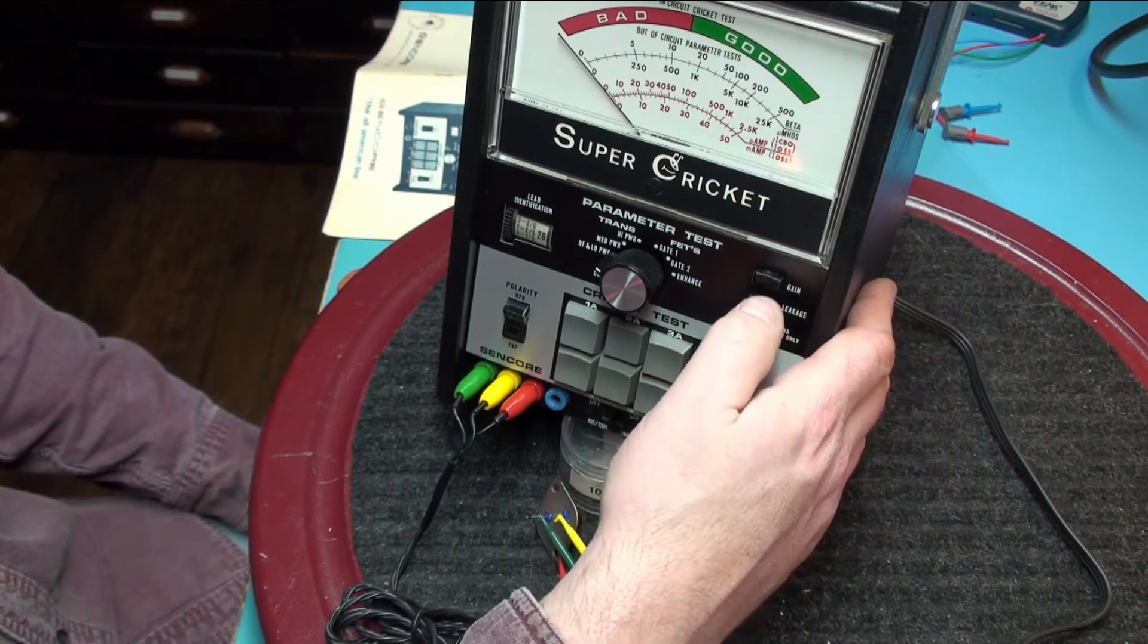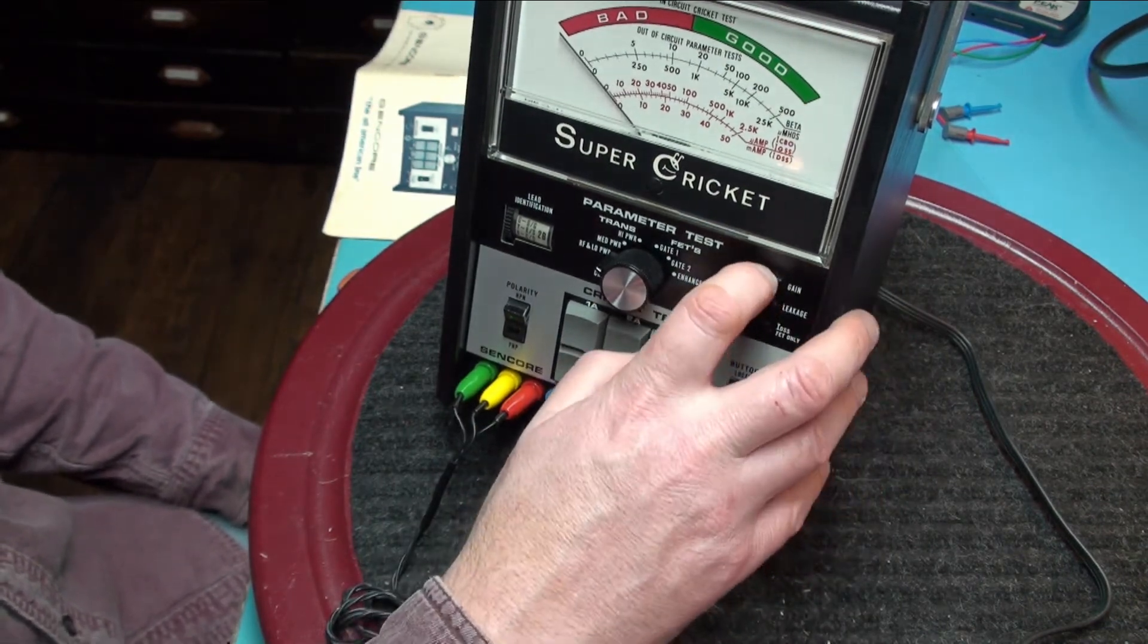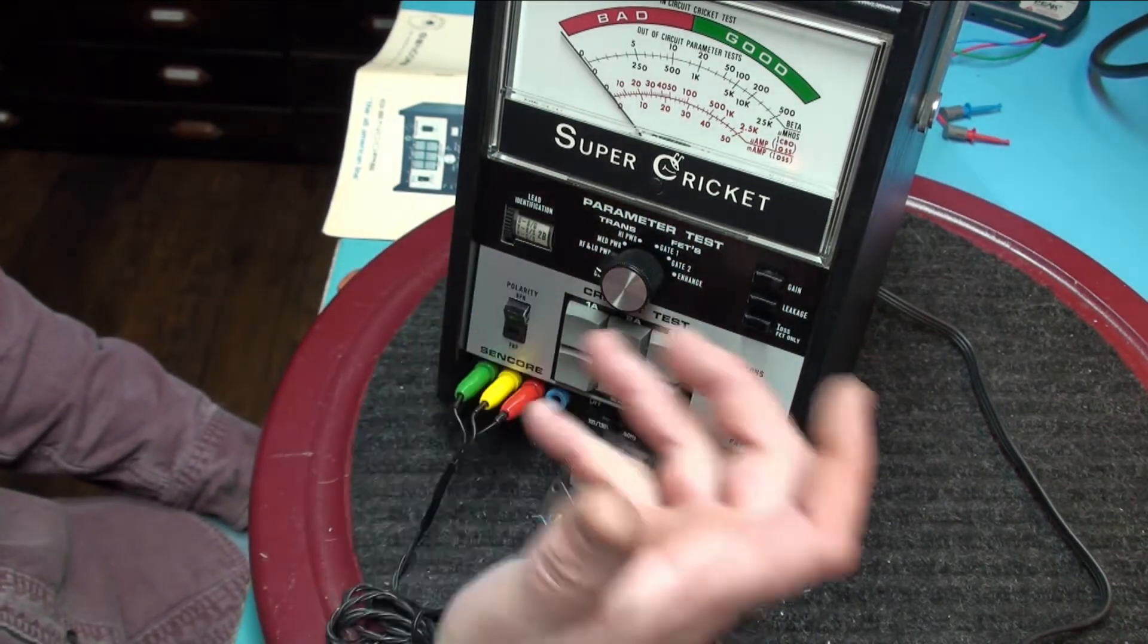So basically this is a good transistor and we know that the gain is 200 and we know the lead identification and we know it is a PNP.